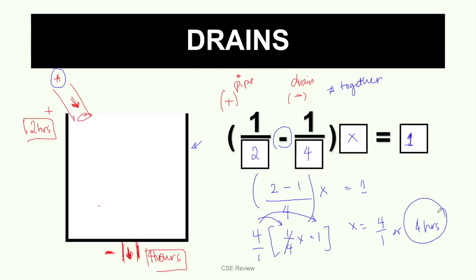So what do you do? The concept stays the same. Every time you add a drain, it's minus. Every time you add a pipe, it's plus. So if you have two pipes, that means two positive fractions — you could have 1/3 plus 1/2 minus 1/4. If you add another drain, that's two drains, you add another minus fraction like minus 1/6. Your equation just gets longer and longer — that's the core concept.